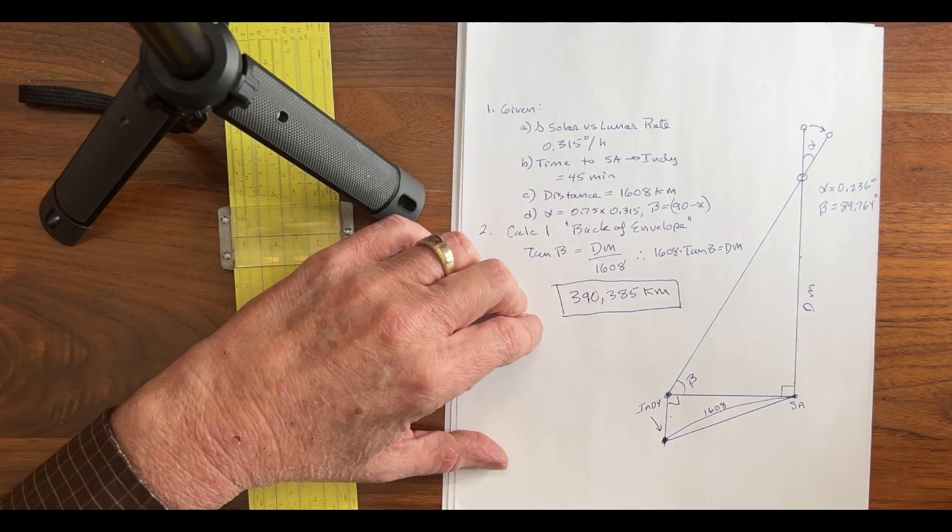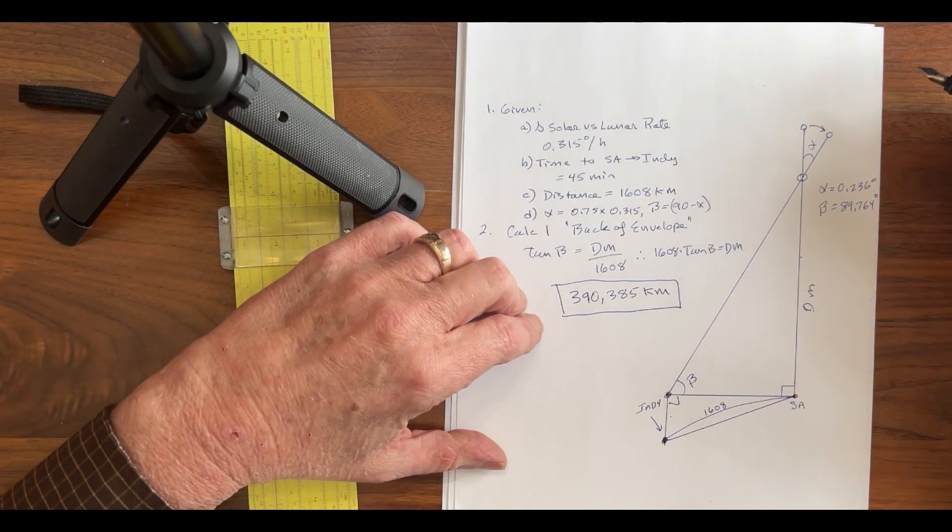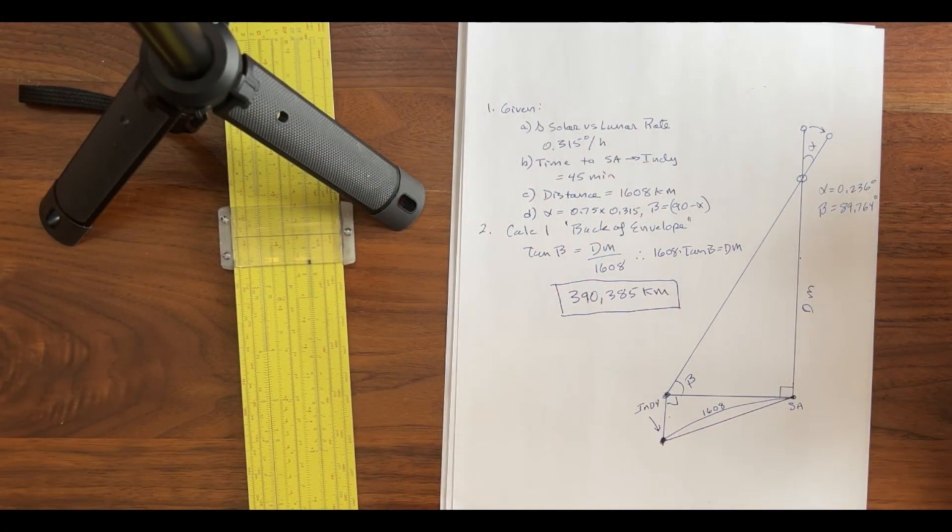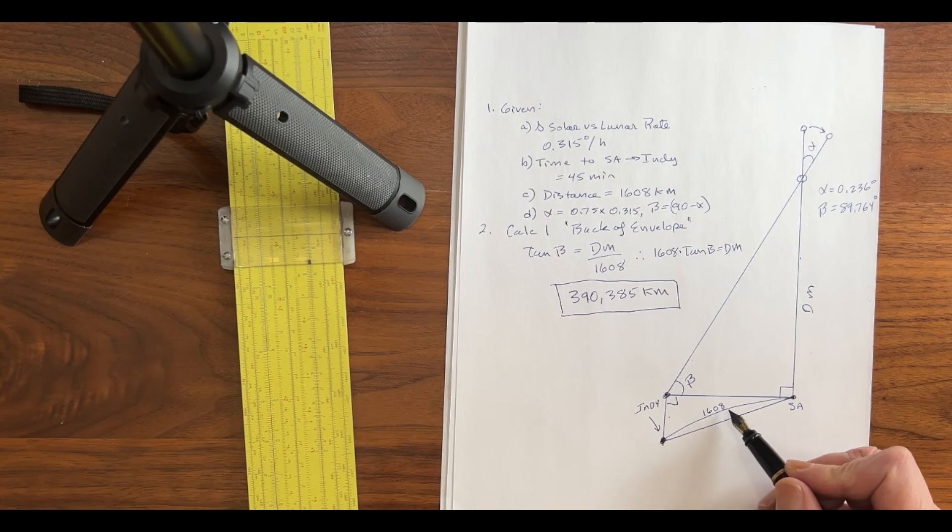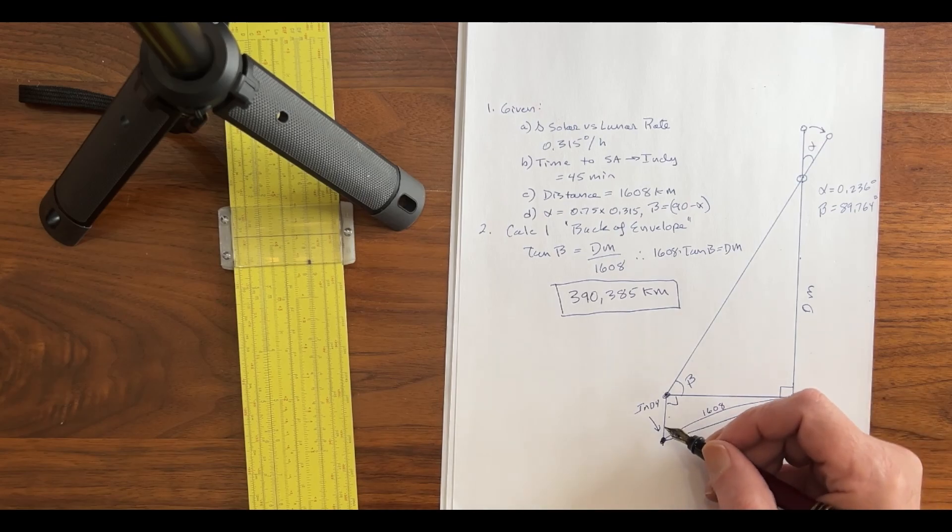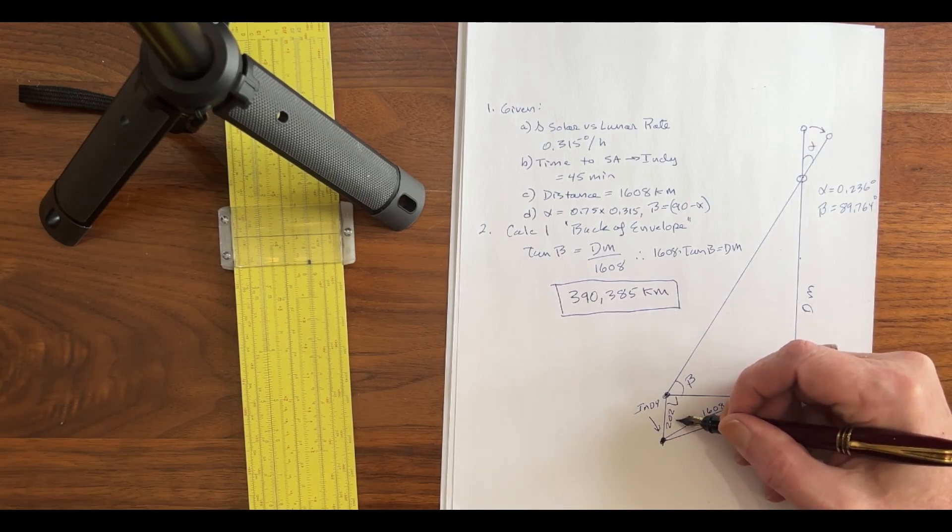Next question that we have is, how long is that segment right there? Well, Flat Earthers, I told you that 8 inches per mile that I talked about a couple of weeks ago was going to come back and bite you. Right now is that time. So, you're all familiar with 8 inches per mile squared, and as we demonstrated a while ago, there are also conversion factors for nautical miles and kilometers. In this case, we square 1608 kilometers and multiply it by 7.8 centimeters per kilometer squared. And, as a result, this distance is 202 kilometers.